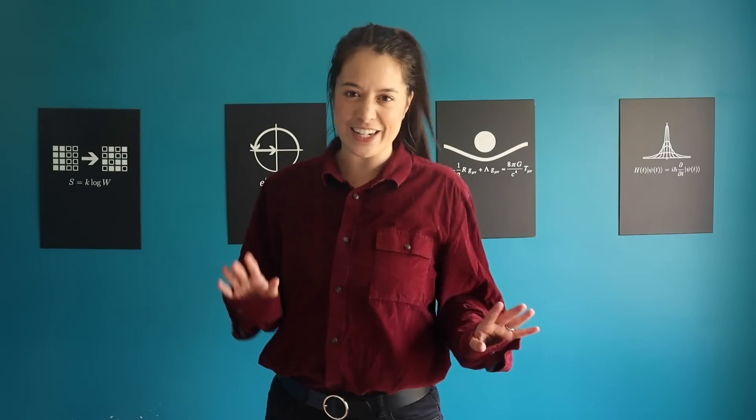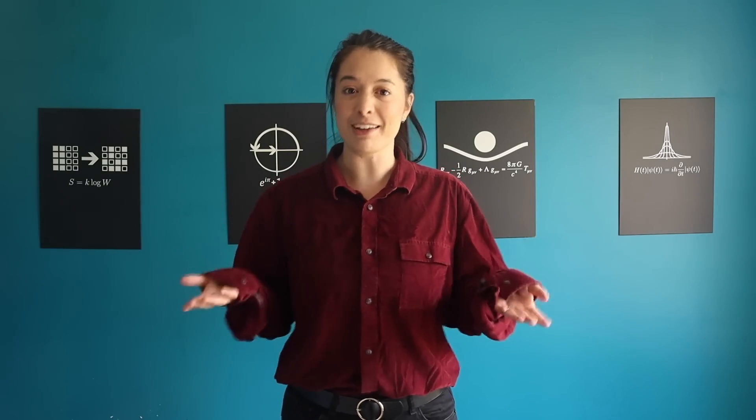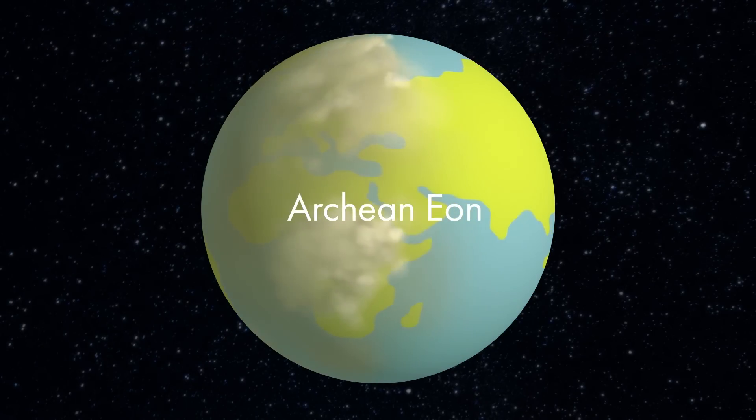As we know from human emissions, carbon dioxide can drastically change the climate and warm the Earth, especially when released in high amounts. Billions of years ago, during what we now call the Archean Eon, it's believed that volcanic activity was much more common than it is today.